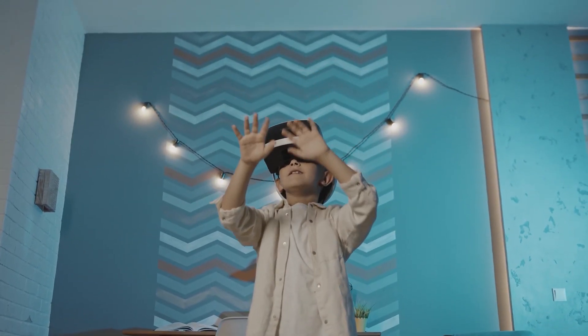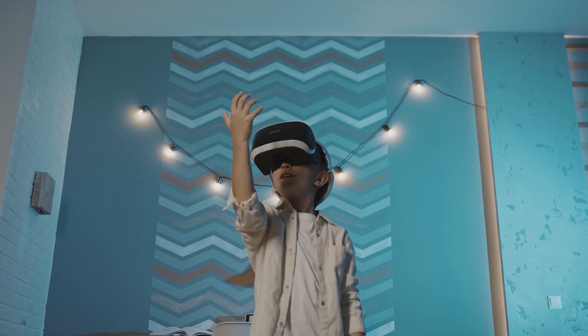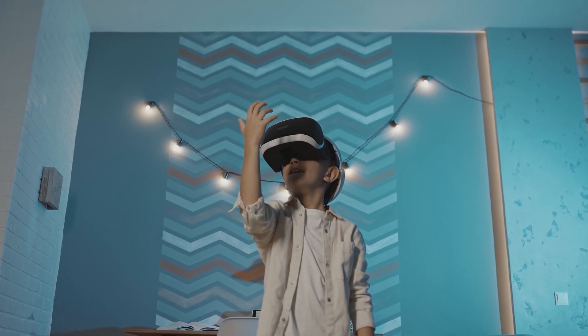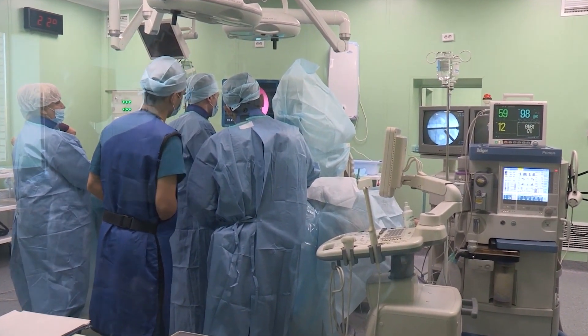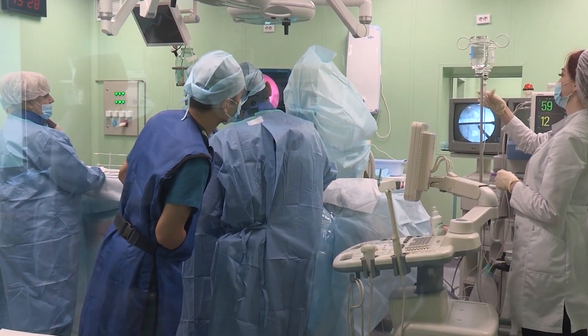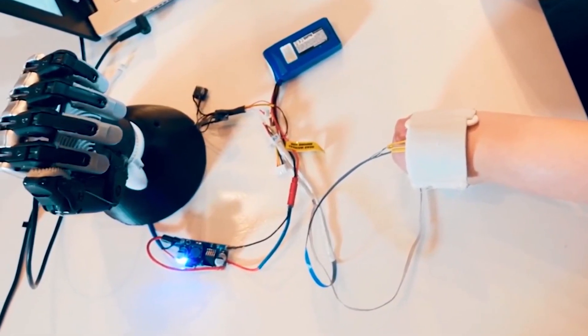Now the question is, how far Neuralink actually is from being able to successfully demonstrate this technology on humans? Well, if we are talking about the chips that will be able to solve various health conditions, then they are probably not far away. Considering the fact that Elon Musk really puts in the effort to deliver what he promises, we'd have to say it would be around 2025 or probably sooner.